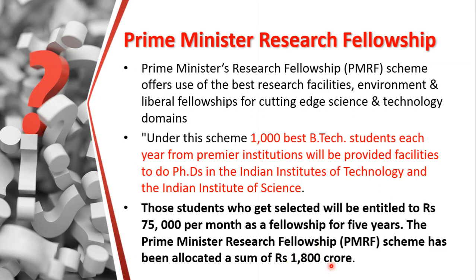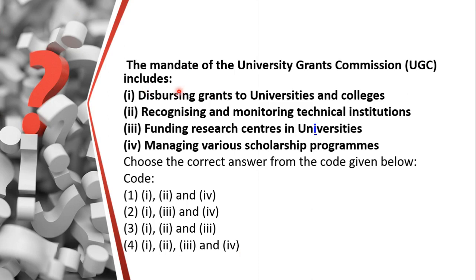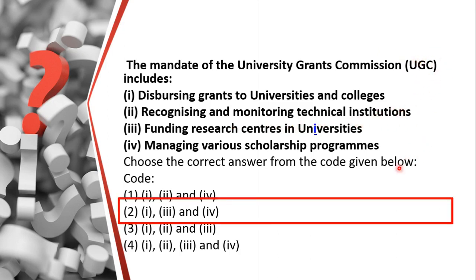Regarding PMRF — Prime Minister Research Fellowship: each year, 1000 of the best B.Tech students from premium institutions like IITs and IISCs are selected to pursue a PhD. They receive a fellowship of ₹75,000 per month for 5 years. The budget was announced in 2018. Regarding the UGC mandate: UGC grants funding, funds research, and maintains scholarship programs, but technical institutions are governed by 15 other bodies — not UGC. That is a very important point.